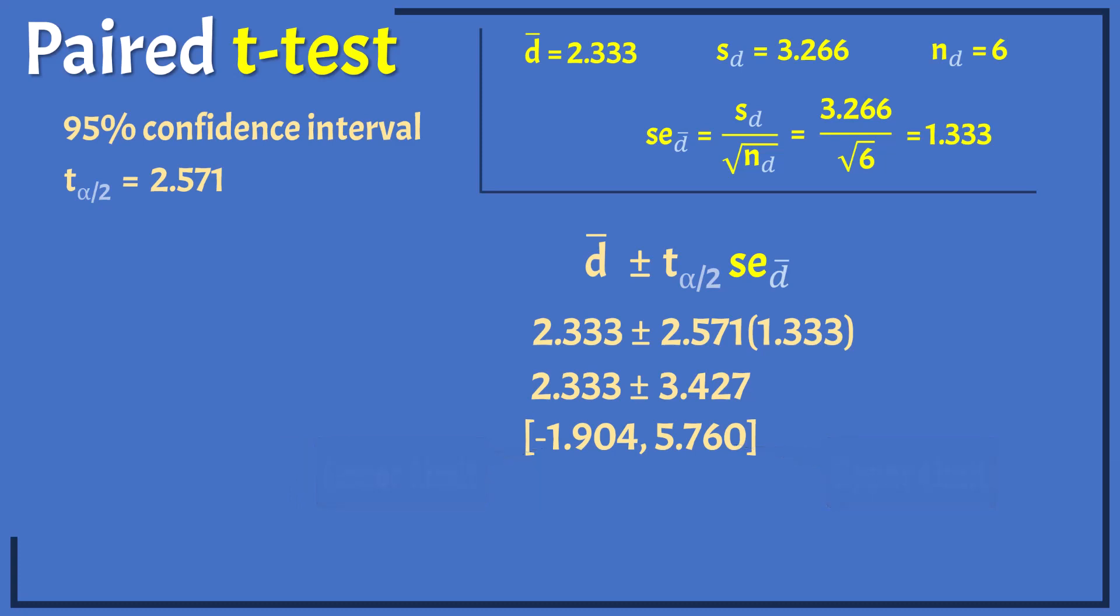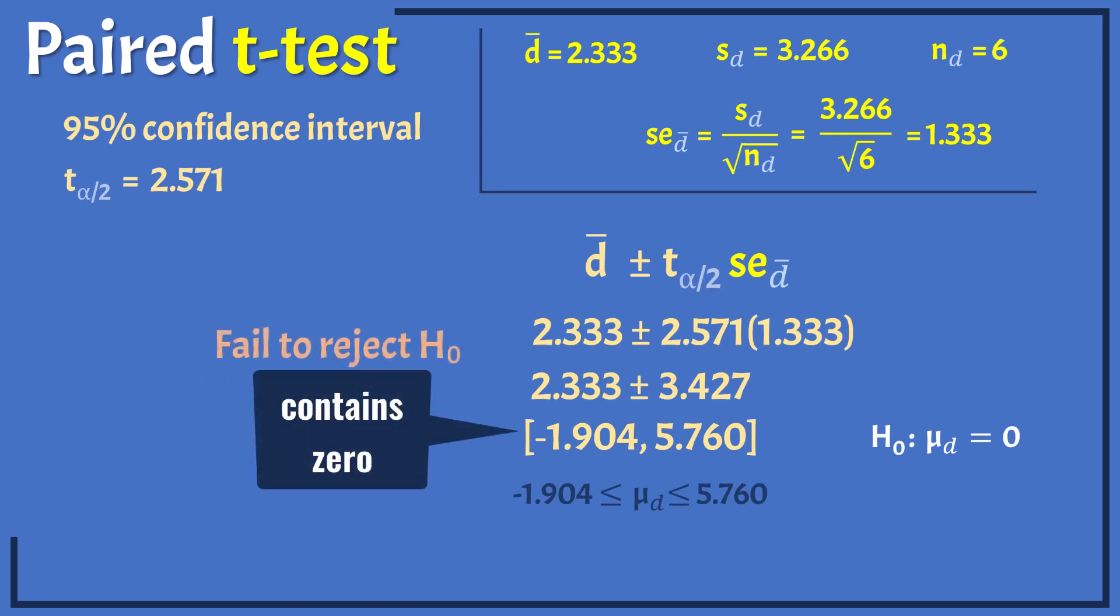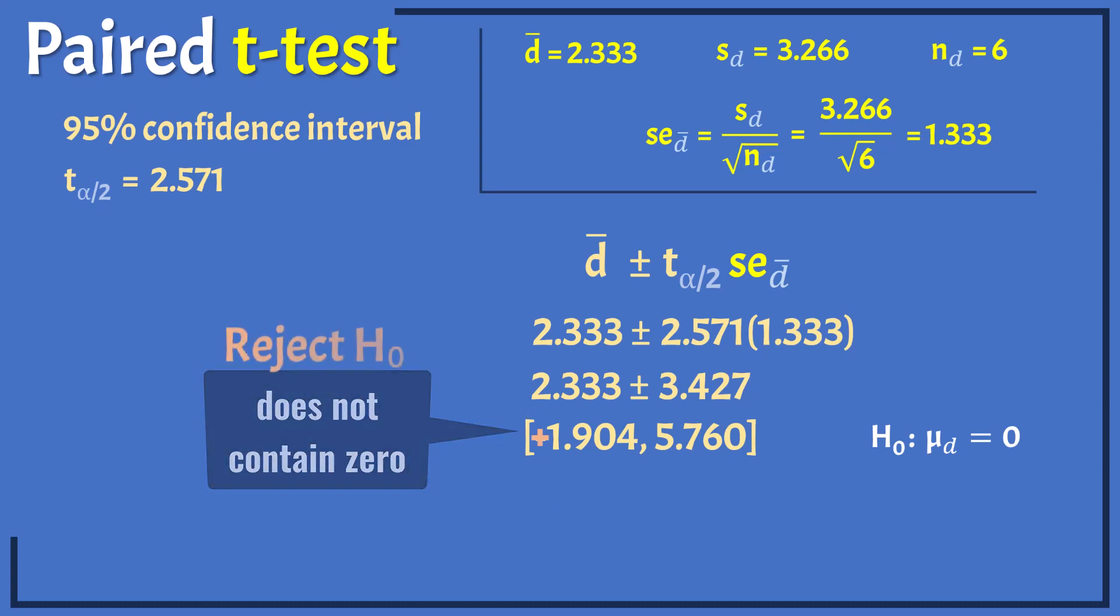We can also use this interval to make a decision about rejecting the null hypothesis. Since the confidence interval contains the hypothesized value 0, we fail to reject the null hypothesis at alpha equals 0.05. If this negative 1.9 had been positive, then the interval would not contain 0 and we will reject the null hypothesis.